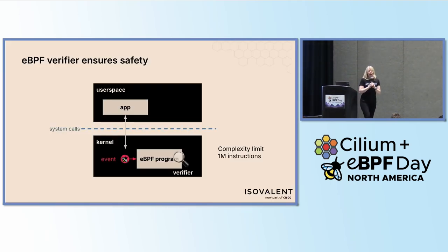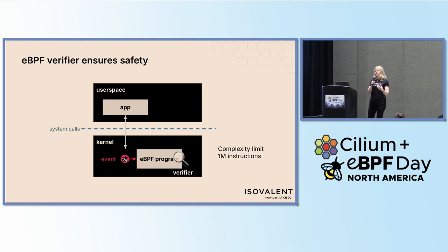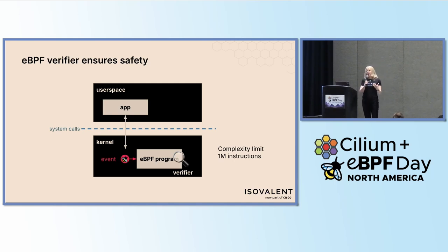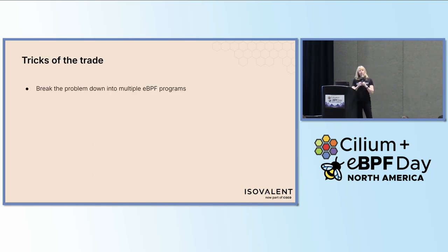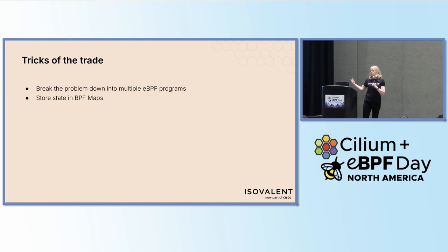So yes, we can implement Game of Life in EBPF, which may seem a little bit in conflict with the idea that we have the EBPF verifier and there's a complexity limit. The verifier analyzes every EBPF program to make sure that it's safe to run, and it will only analyze up to a million instructions. And that kind of raises the question: how can you implement any arbitrarily complex problem if you're limited to a million instructions?